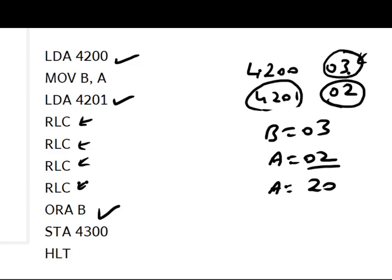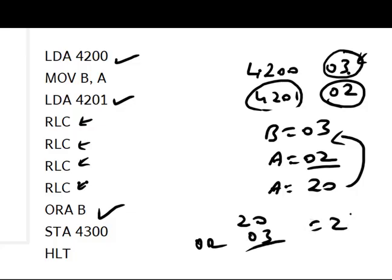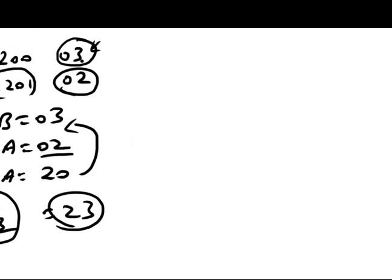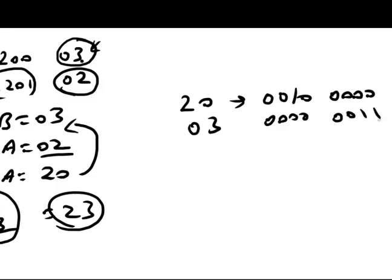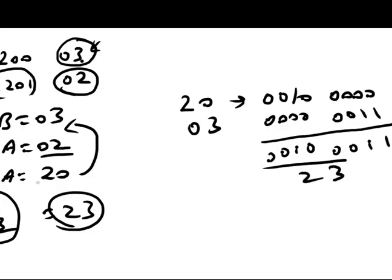Next, ORA B ORs the contents of register A with register B. So we OR 20 with 03. In binary: 20 is 00100000 and 03 is 00000011. Applying OR — if any single input bit is 1 the output is 1 — we get 00100011, which is 23. The answer 23 is now stored in register A.